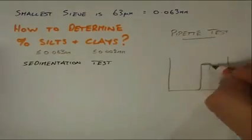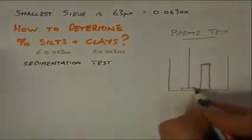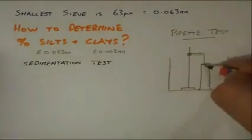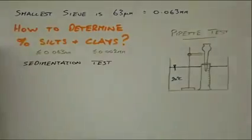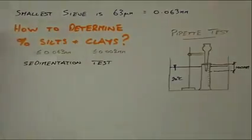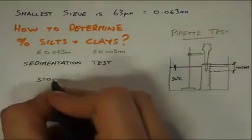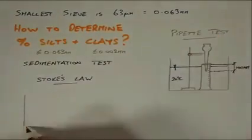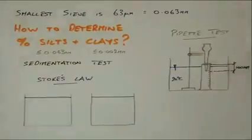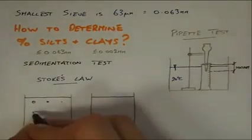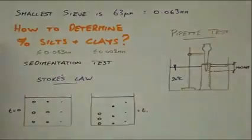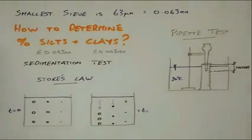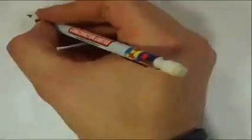The principle of the sedimentation test is based on Stokes' law. In the pipette method, discrete samples of the soil and water suspension are extracted at a depth of 100 millimetres from the graduated cylinder. This is done at specific time intervals after the mixture has been agitated. During each time interval, the larger diameter soil particles will settle faster than the smaller diameter particles, and using Stokes' law we can determine the percentage silt and percentage clay present.